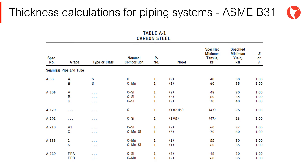The table shown on the screen lists the different piping materials and the corresponding mechanical properties. Here is where the code includes the safety factors for each material based on experience and results obtained.